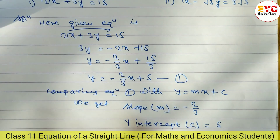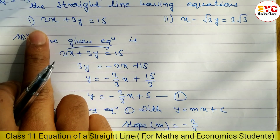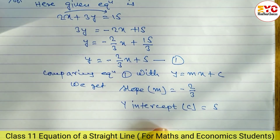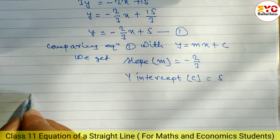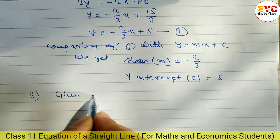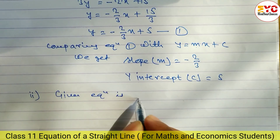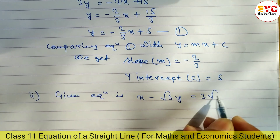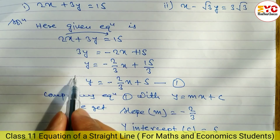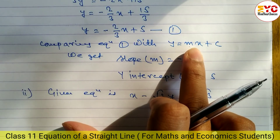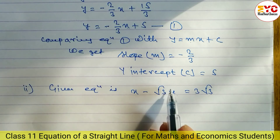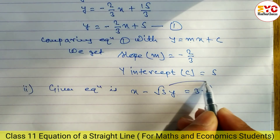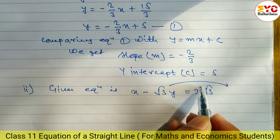Now look at part 2. We have to do the same process. Given equation is x - √3·y = 3√5. We have to find out the value of y. Since y is negative, first we have to make it positive by taking it to the right side.